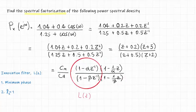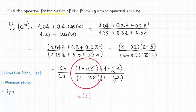Finally, for the innovation filter to be minimum phase, we want alpha and beta to be within the unit circle.